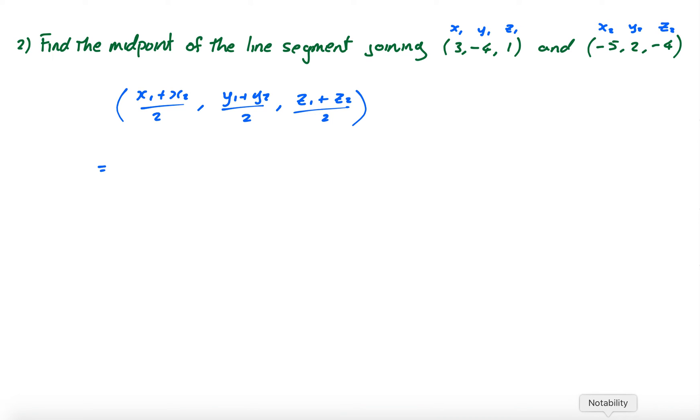Now let's go back to this. So it's a case of subbing in the numbers that I have. So x1 is 3. So it's 3 minus 5 over 2, comma, negative 4 plus 2 over 2. This is my negative 4 plus 2 over 2, comma, 1 minus 4 over 2.